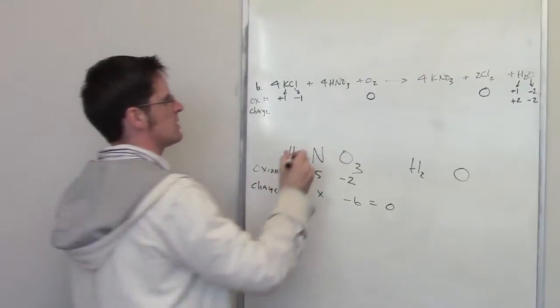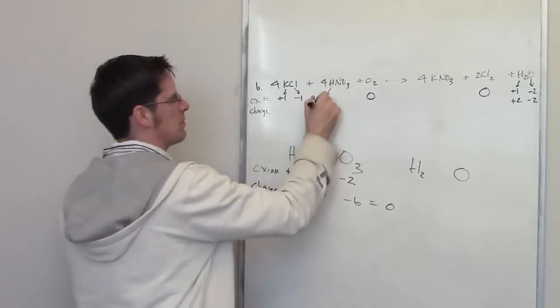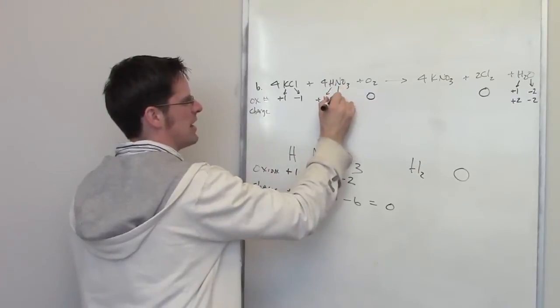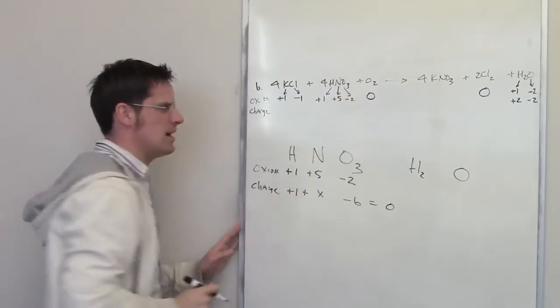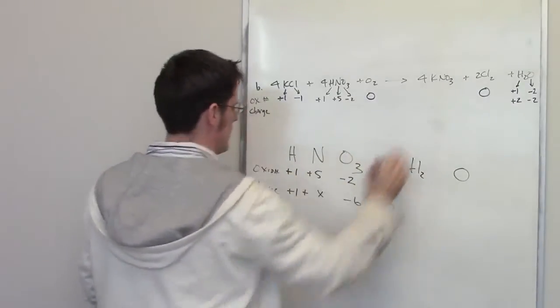So nitrogen here has an oxidation number of plus five. So I'll go ahead and go back up here. I'll write down plus one for the hydrogen, plus five for the nitrogen, and minus two for the individual oxidation number for that oxygen. Let's take a closer look here at this KNO3.